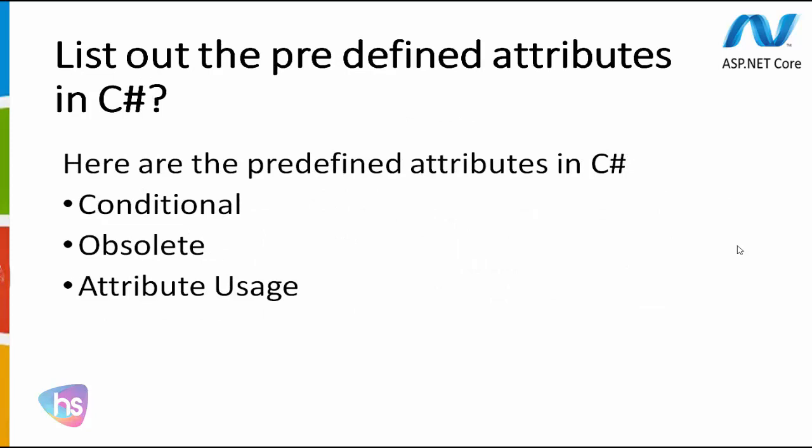The next question is: list the predefined attributes in C-Sharp. The predefined attributes in C-Sharp are: Conditional, Obsolete, and AttributeUsage. These are the main predefined attributes in C-Sharp.